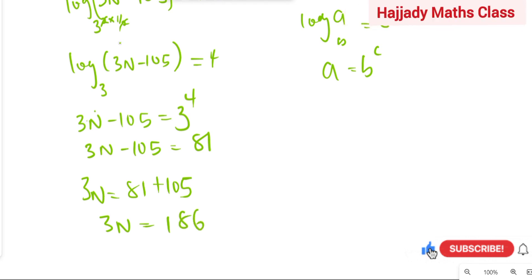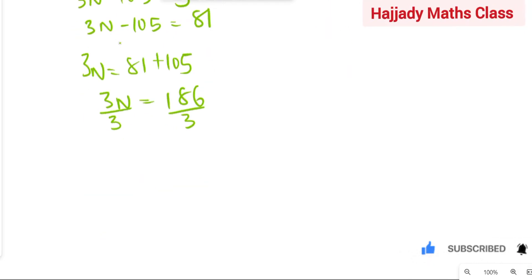So, dividing both sides by the coefficient of N, which is 3. Here we have that N equals, 3 into 18 is 6, 3 into 6 is 2. So, we have N to be equals to 62.